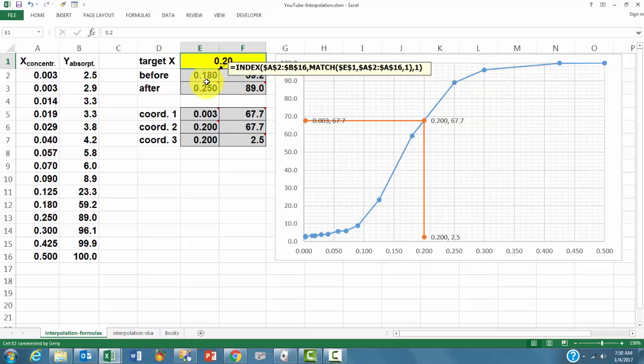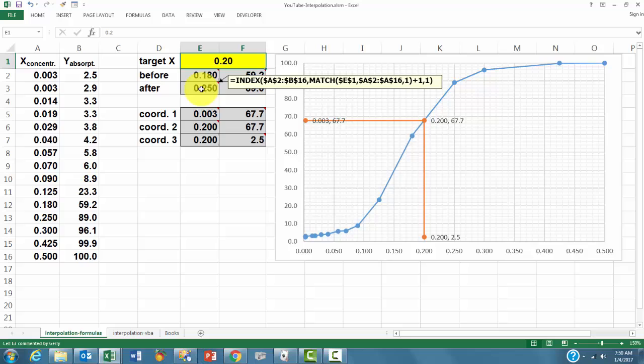The one after it is now very simple. All you have to do is find the before one and add plus 1. You want to find that value in column 1, and then you do the same in column 2, plus 1 for the MATCH.